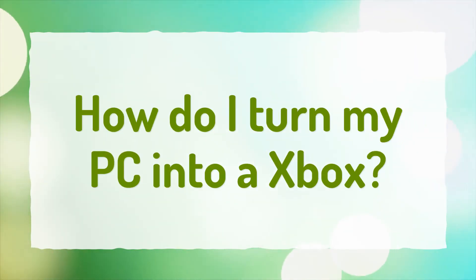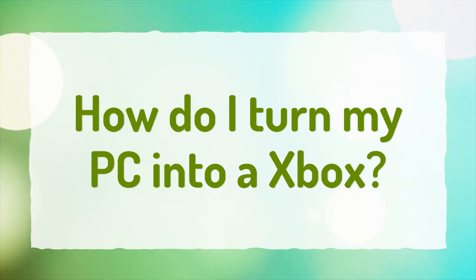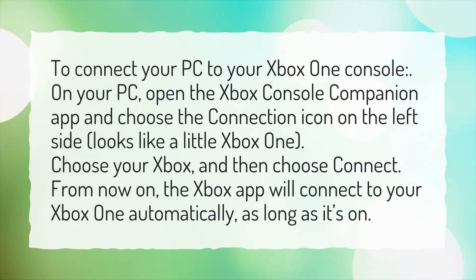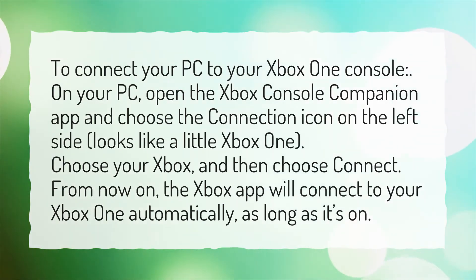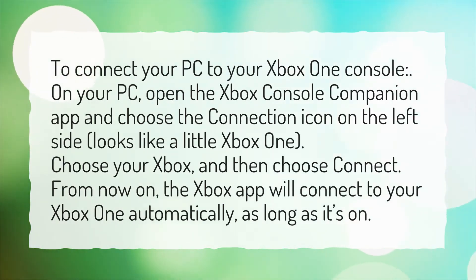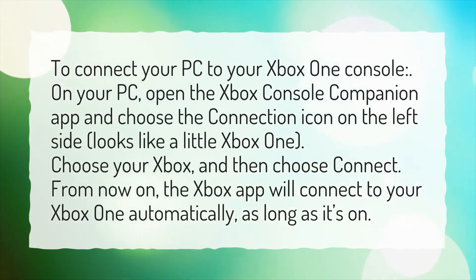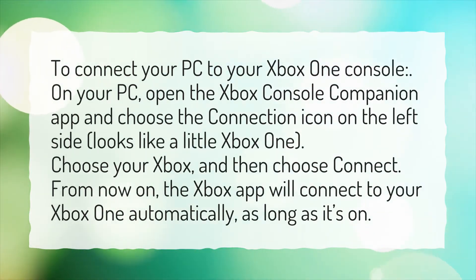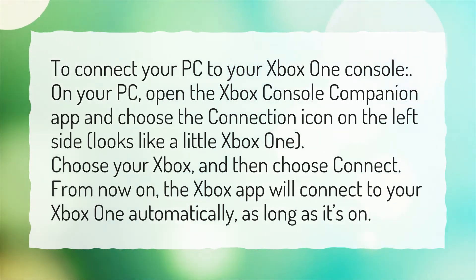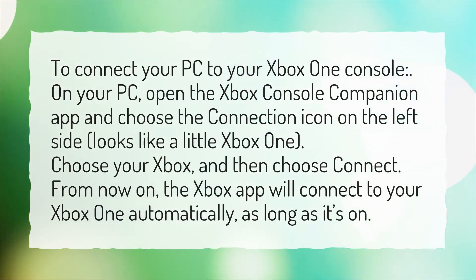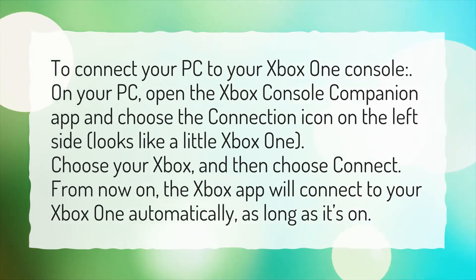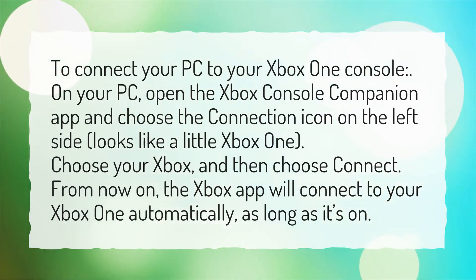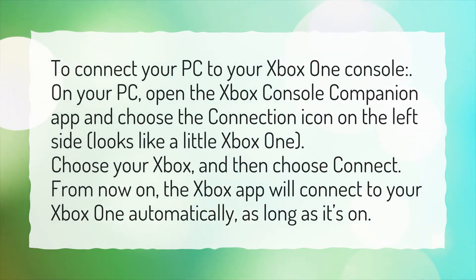How do I turn my PC into an Xbox? To connect your PC to your Xbox One console, on your PC open the Xbox Console Companion app and choose the connection icon on the left side — it looks like a little Xbox One. Choose your Xbox and then choose Connect. From now on, the Xbox app will connect to your Xbox One automatically, as long as it's on.